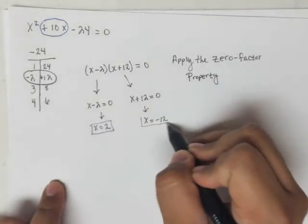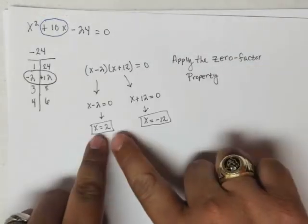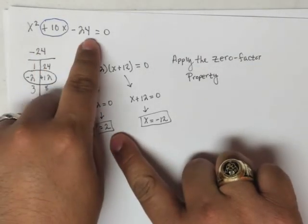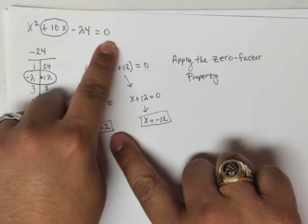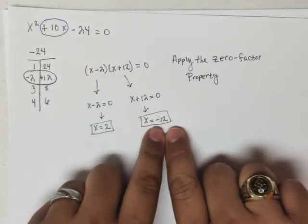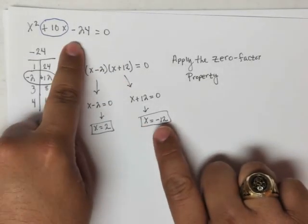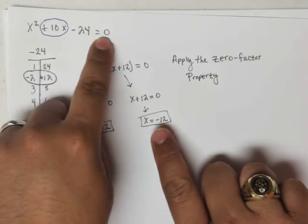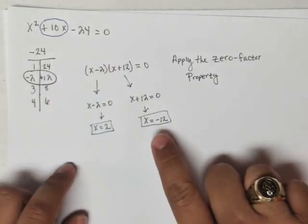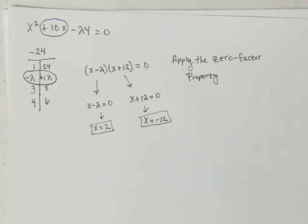So, coincidentally what happens, if you wanted to check your work, you could plug in 2 into the quadratic here, and you're going to get 0, or you could plug in negative 12 in here, and you're going to get again 0. So, we have solved this quadratic equation using the zero factor property.